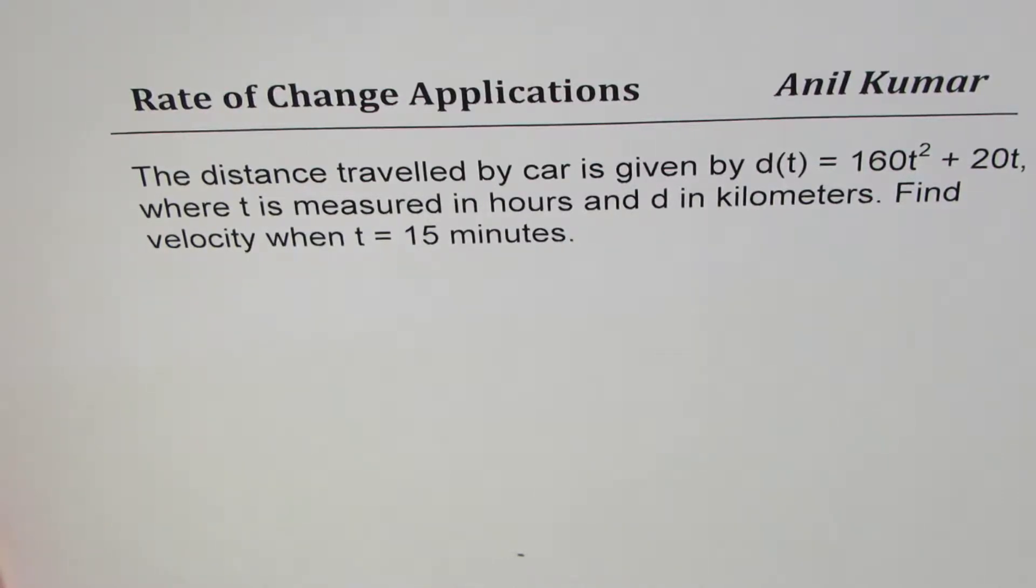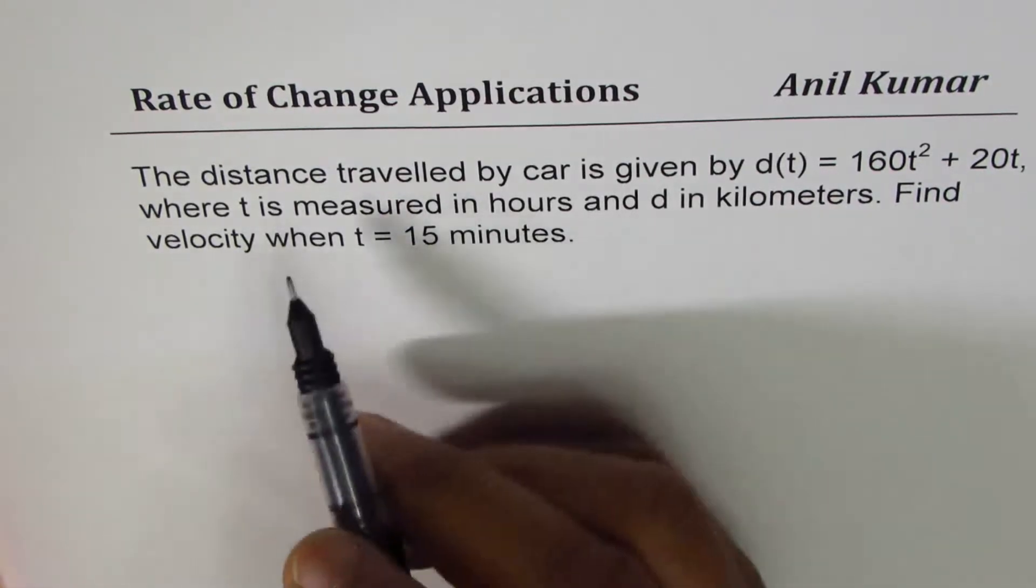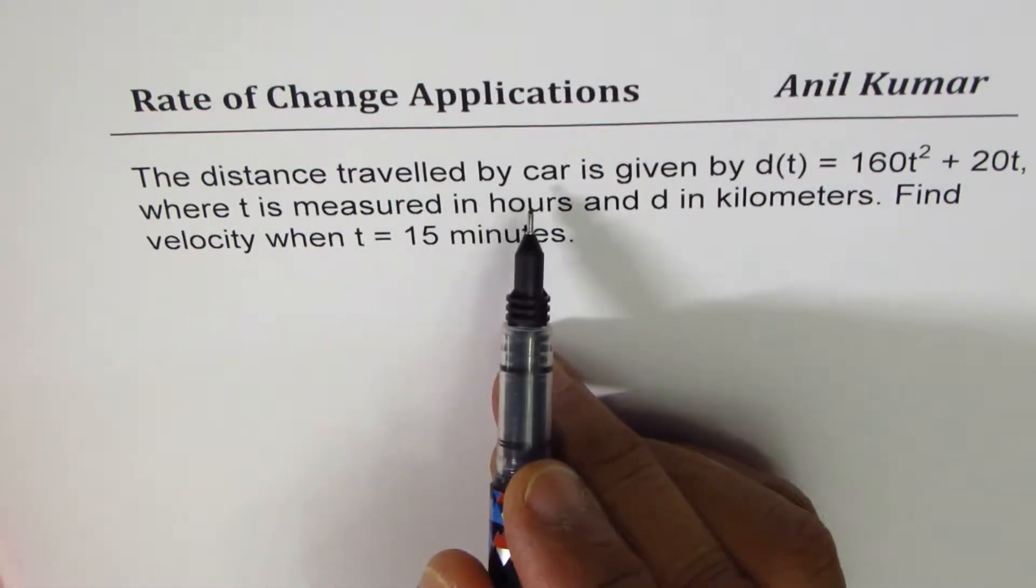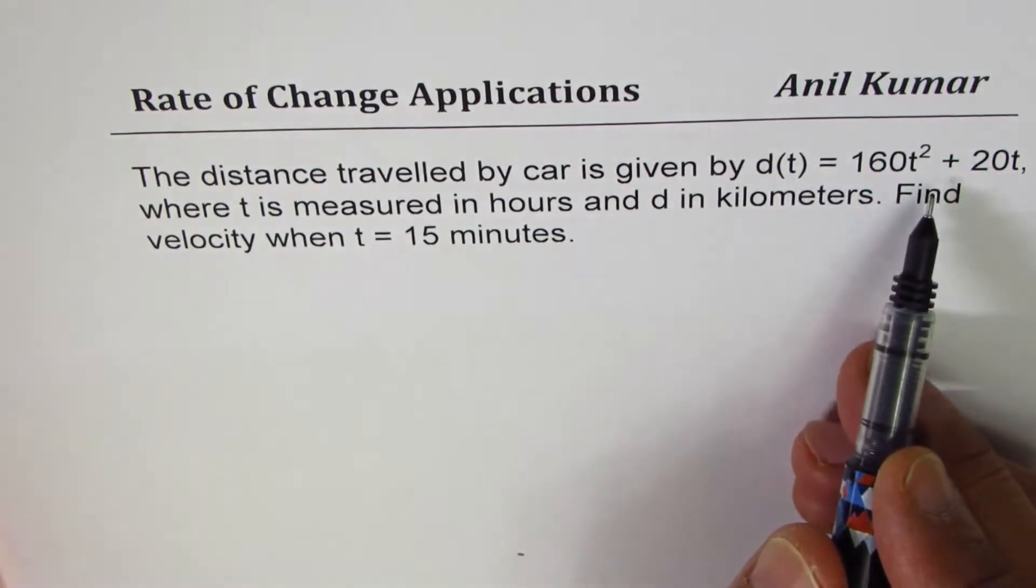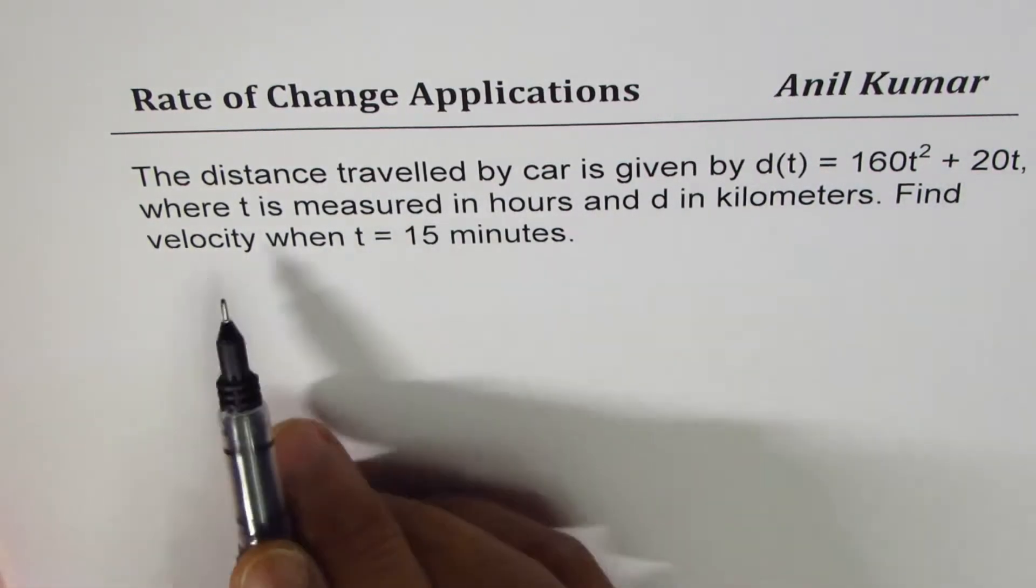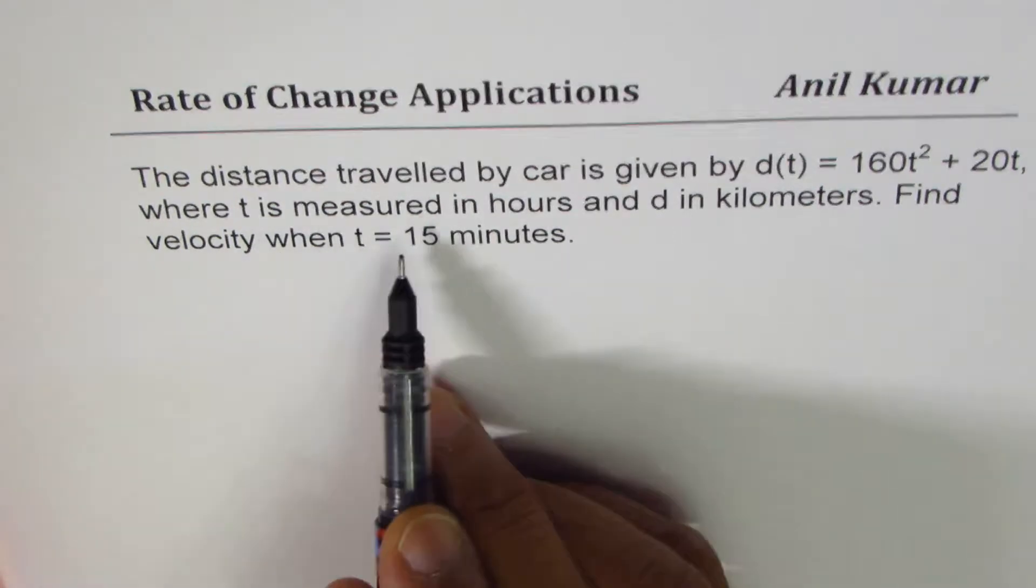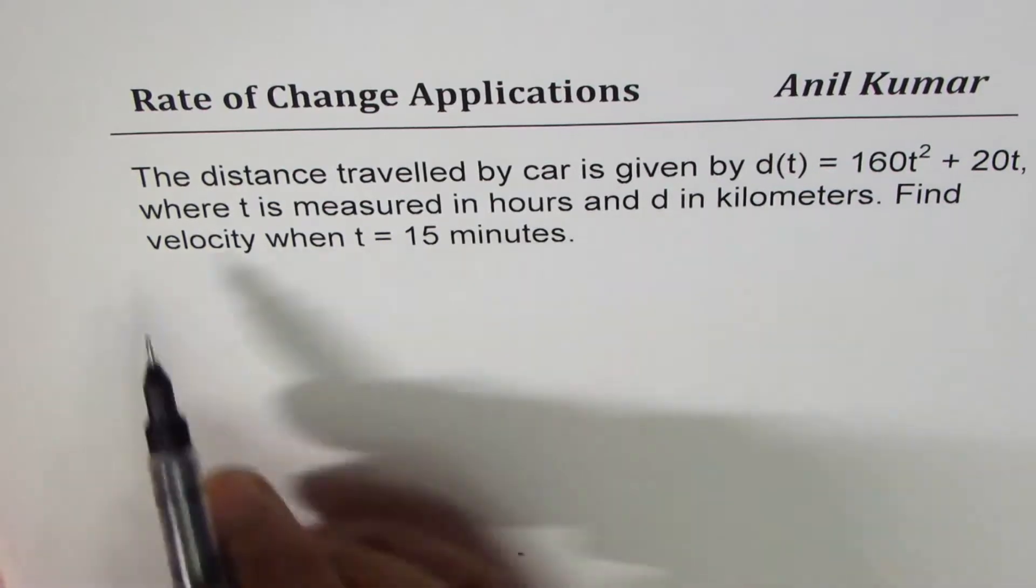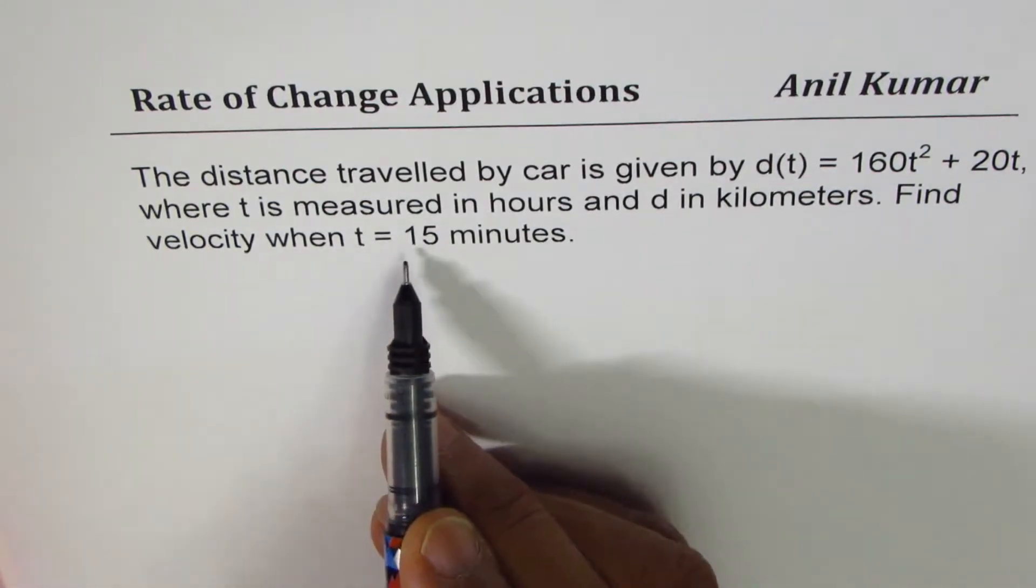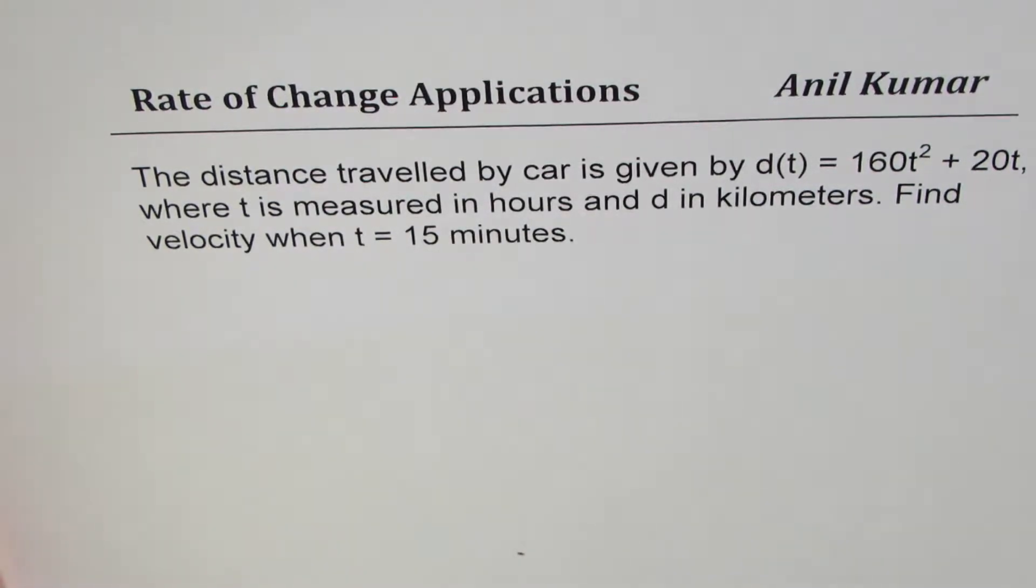The question here is the distance traveled by car is given by d(t) = 160t² + 20t, where t is measured in hours and d in kilometers. Find velocity when t = 15 minutes.